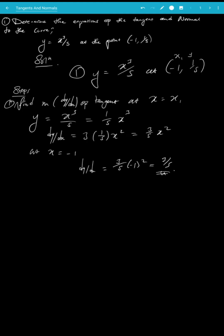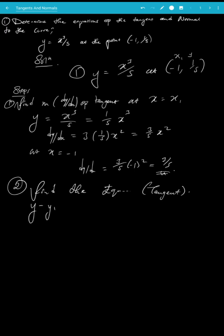This can also be written as 0.6 — some prefer 0.6, others write it as 3/5. Now step two: find the equation of the tangent. We use the formula y - y1 = m(x - x1), where m is the gradient of the tangent.